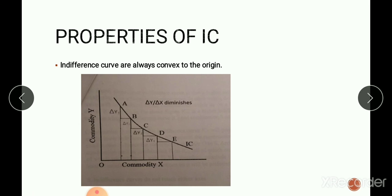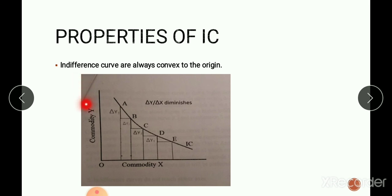Now let us discuss the properties of indifference curves one by one. First, an indifference curve is always convex to the origin. The indifference curve is convex to the origin because of the marginal rate of substitution — the MRS declines continuously due to the law of diminishing marginal utility. When the consumer consumes more and more of commodity X, his marginal utility from X keeps on diminishing, so he is willing to give up less and less of Y. Therefore, indifference curves are convex to the origin, and MRS indicates the slope of the indifference curve.